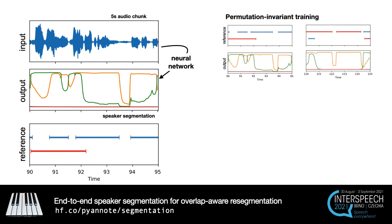In order to generalize to unknown speakers, we use permutation invariant training, so that the neural network is essentially blind to speaker permutations.